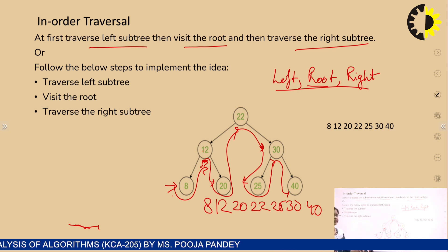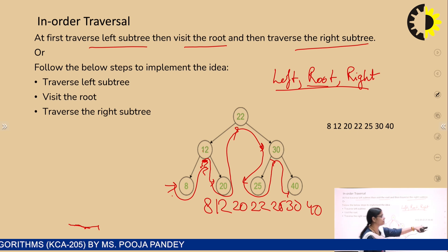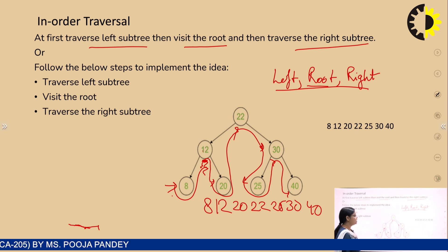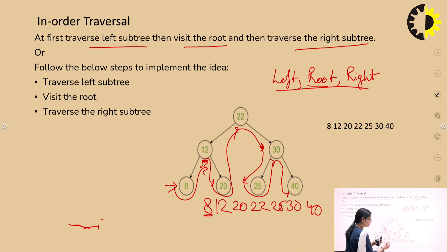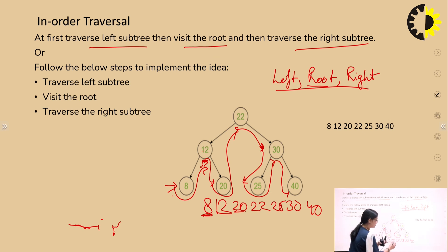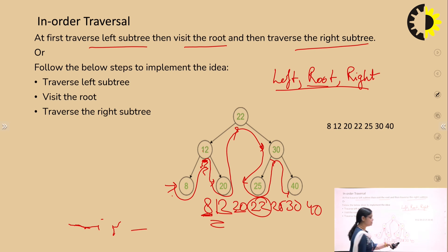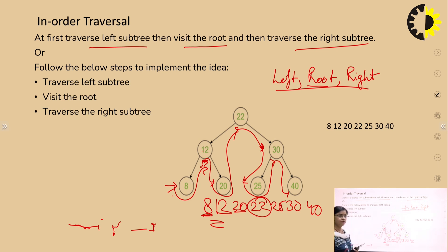We can see that the inorder traversal answer matches the expected result. Traversing left, then root, then right child gives us the correct sorted sequence. This is the inorder traversal of the binary search tree.